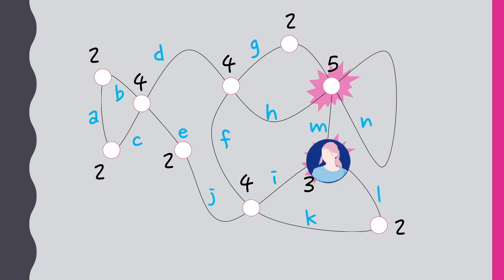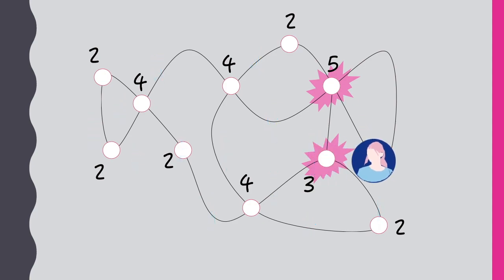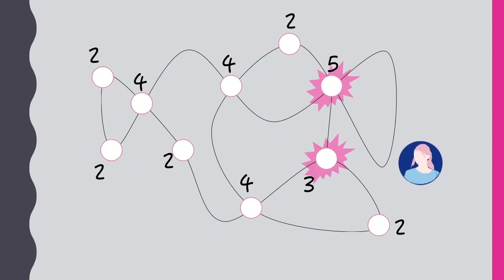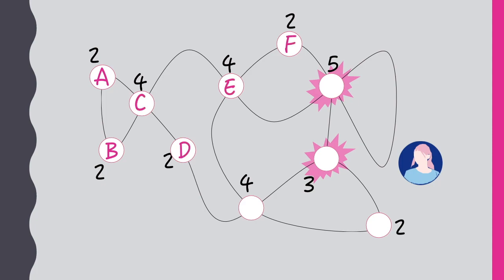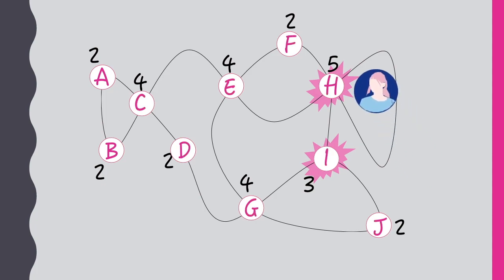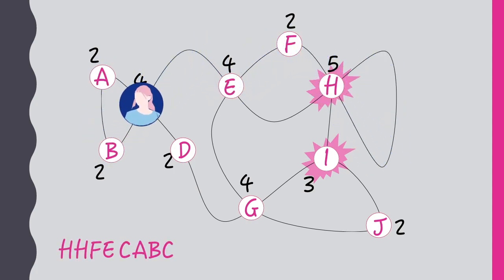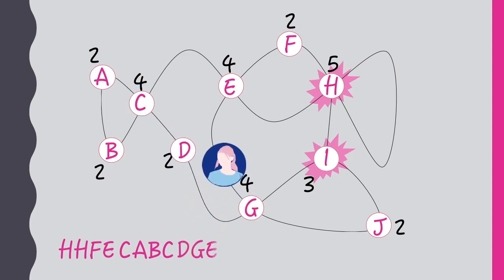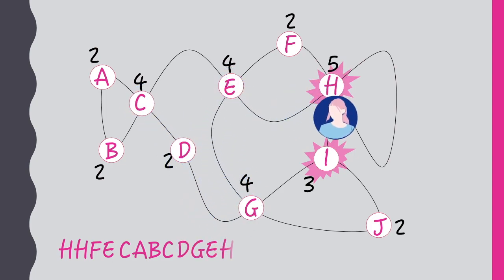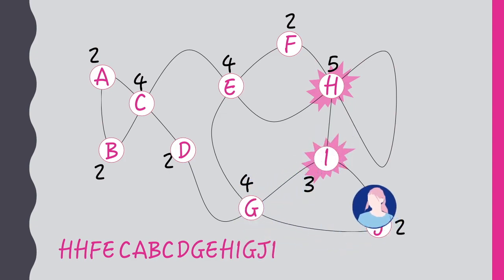It's customary to label the vertices and then refer to edges by the pairs of vertices they run between. So now if we start our path at H, we can go H, F, E, C, A, B, C, D, G, back to E, H, I, G, J, I.